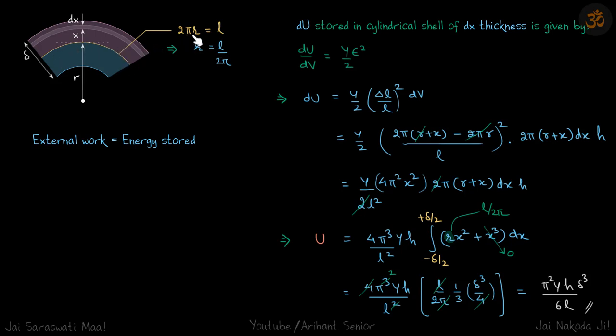So what is delta L? So original length was 2πr which we know is L, but now it is the radius is increased by x amount. So the new length will be 2π(r plus x) minus 2πr, the original length, divide by original length, that is L, whole square. So you can see 2πr, 2πr will get cancelled.